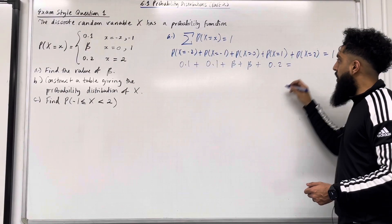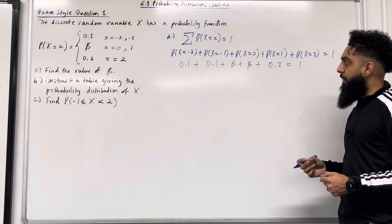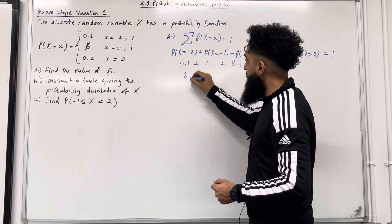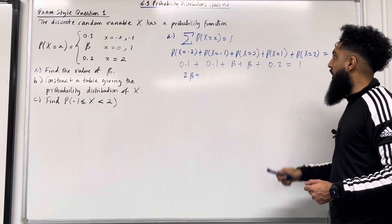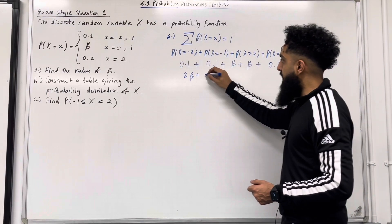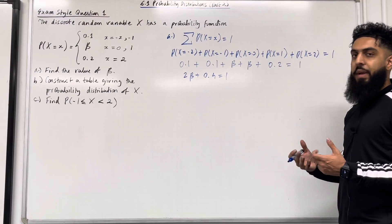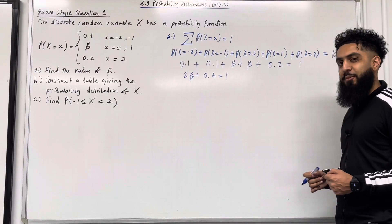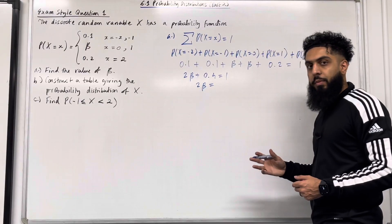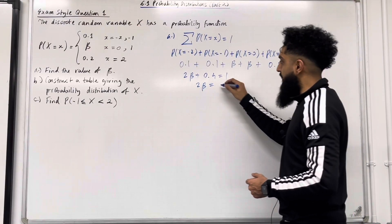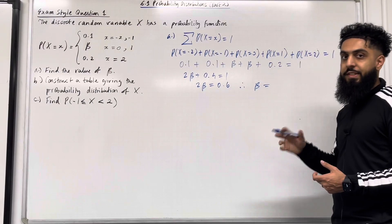This sum must equal 1. Simplifying: beta + beta is 2 beta, plus 0.1 + 0.1 + 0.2 which is 0.4, and this must equal 1. Rearranging: 2 beta = 1 - 0.4 = 0.6, therefore beta = 0.6 / 2 = 0.3.